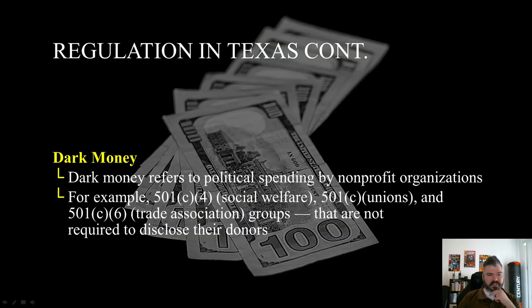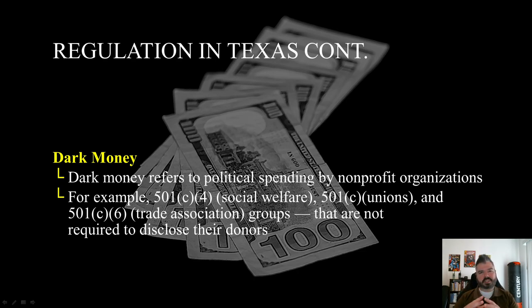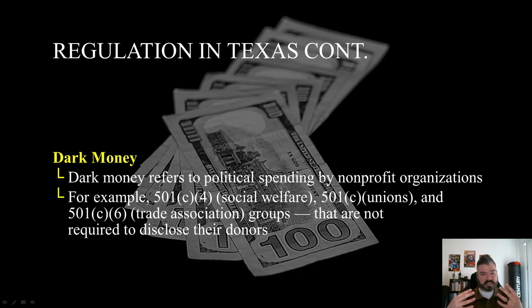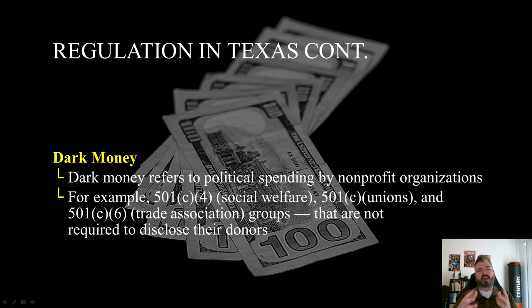Dark money refers to political spending by non-profit organizations — for example, 501c4s (social welfare associations), 501c6s (trade groups), and unions. These organizations are not required to disclose their donors, so we don't know where the money is coming from. That's why it's referred to as dark money.